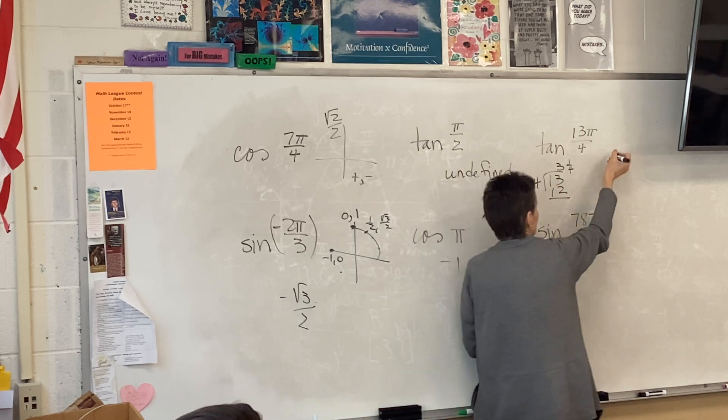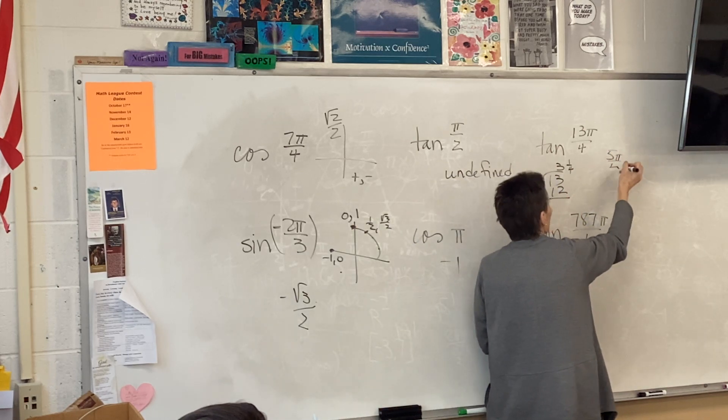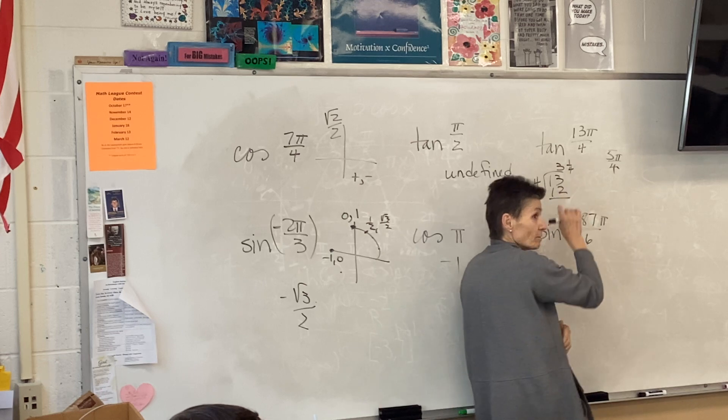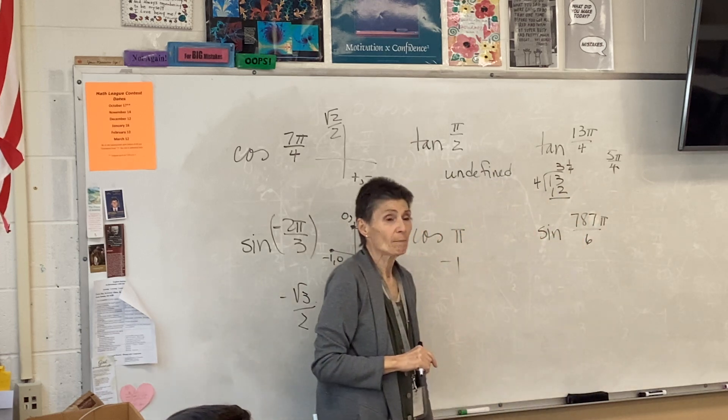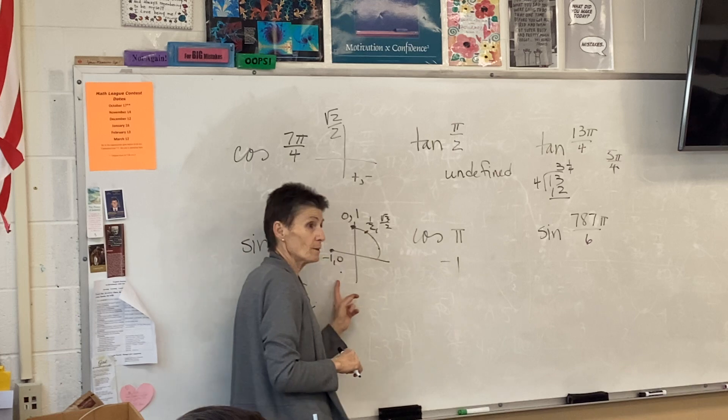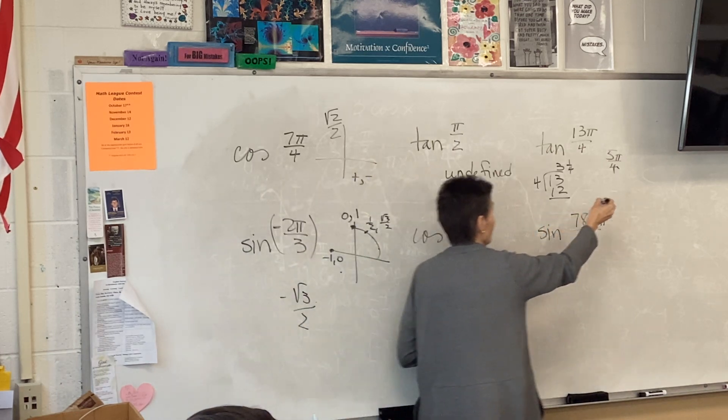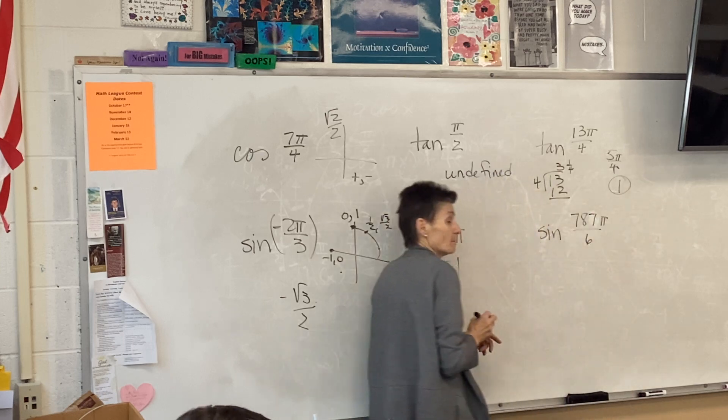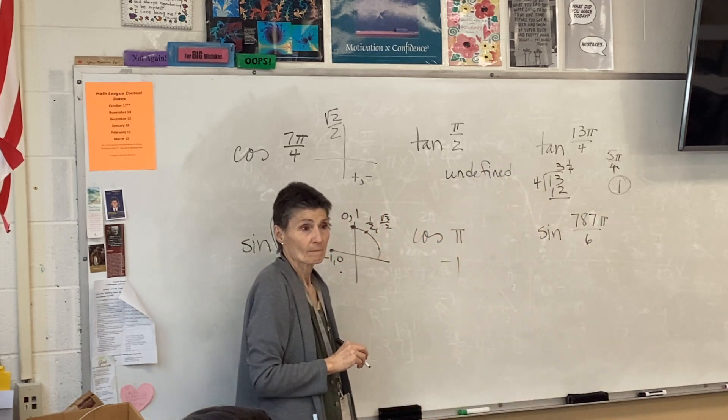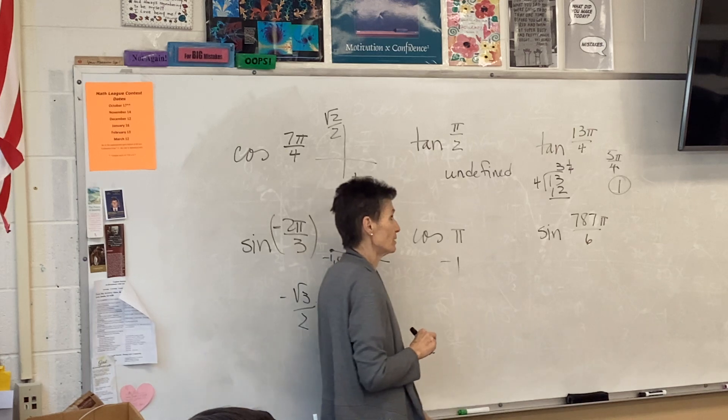So really, this is just 5π over 4, 1 and a fourth. And where's 5π over 4? Quadrant 3. And if I put y over x in quadrant 3, it will be... Right? And, oh my goodness, 787.